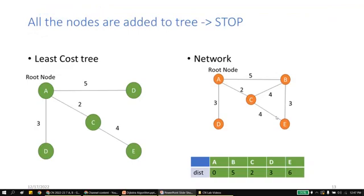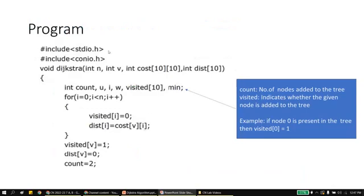After adding all other nodes, terminate the algorithm. This is the final least cost tree. The tree now shows the shortest paths from root node A to every other node, after eliminating all the infinite values and connecting the root node to every other node.